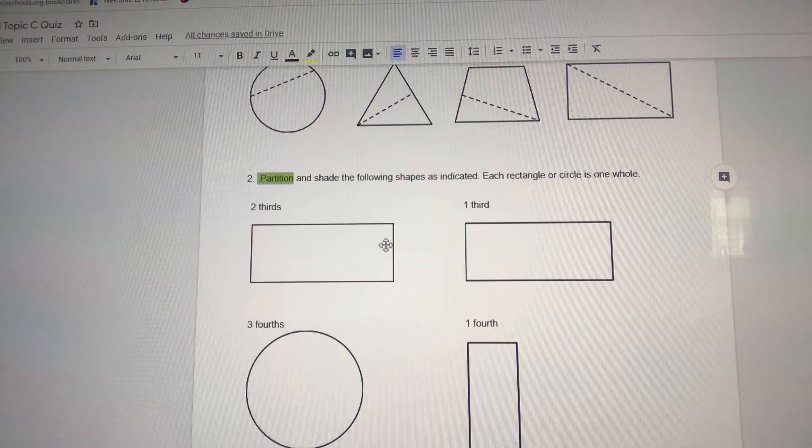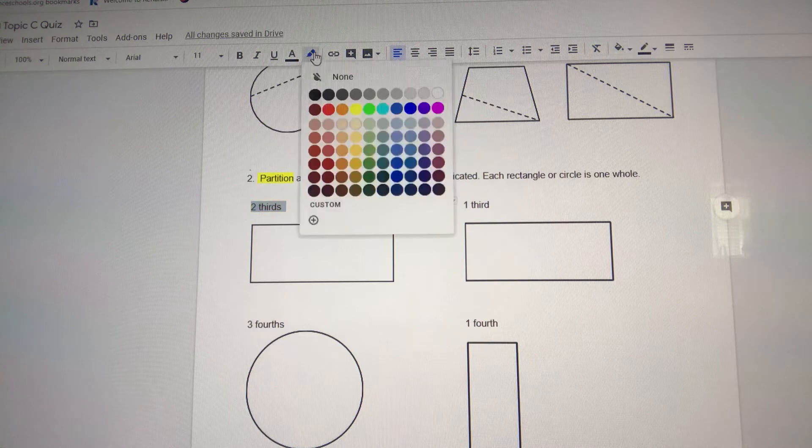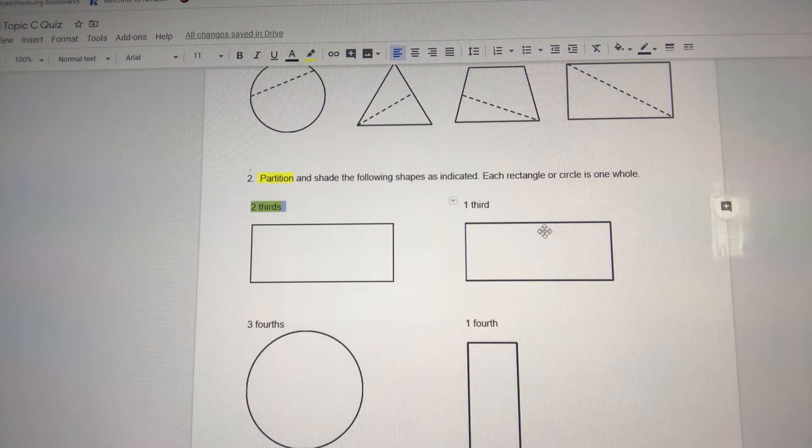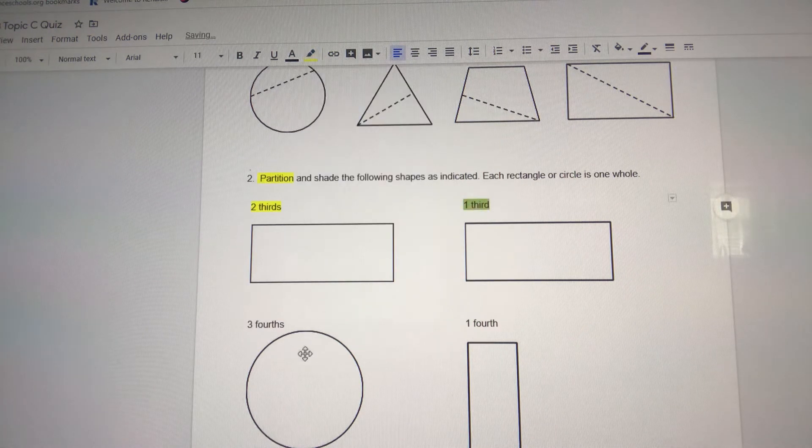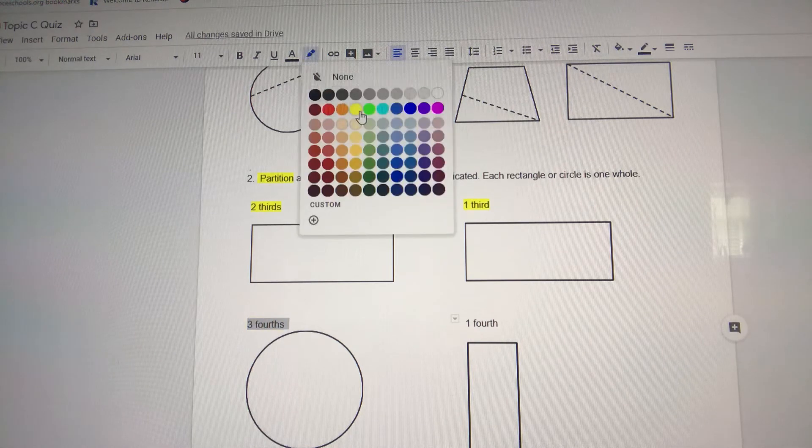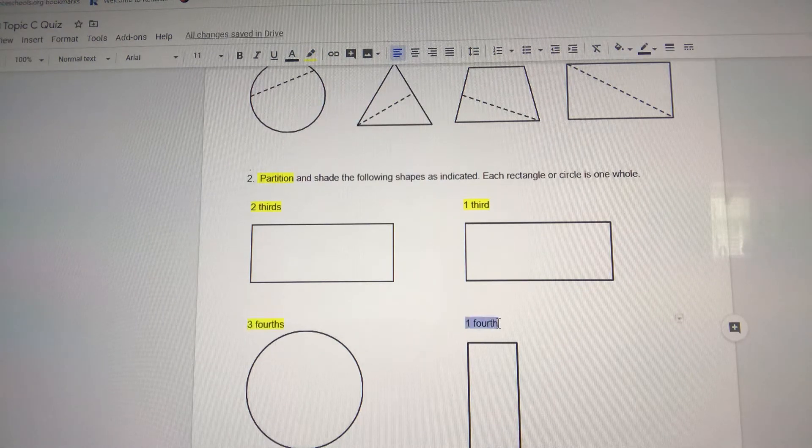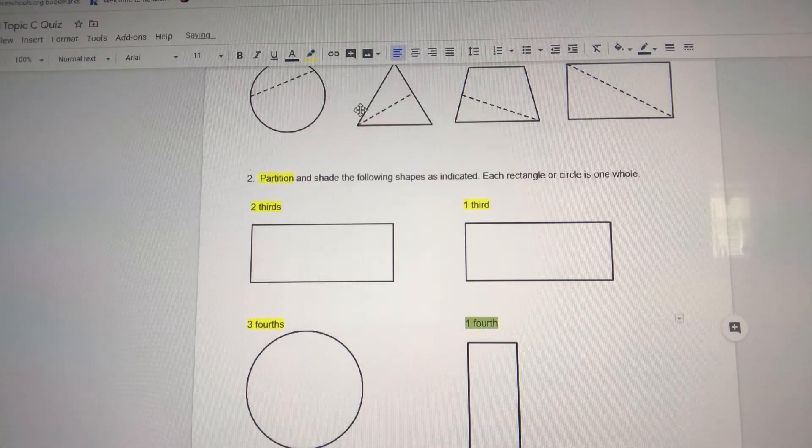They want you to partition this triangle into thirds and shade two-thirds of it. They want you to partition this rectangle into thirds and shade one-third of it. They want you to partition this circle into fourths and shade three-fourths of it. They want you to partition this rectangle into fourths and shade one-fourth of it.